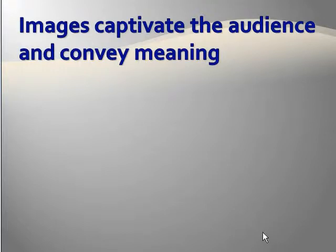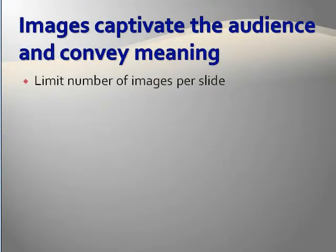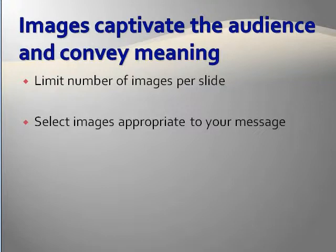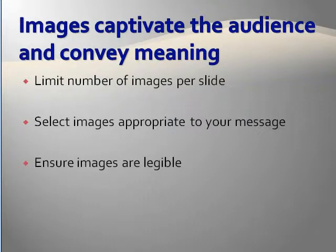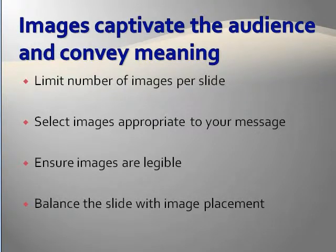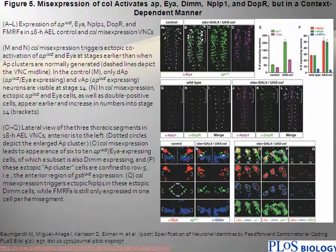Images are one of the most powerful ways for you to convey your message. An image really is worth a thousand words, so limit the number of images per slide to help your audience focus on your main point. Be sure to use images that are appropriate to your message; otherwise you risk distracting your audience. You also want to ensure that the images are legible and visible — nothing is more annoying than hearing the presenter apologize that the figure is illegible. Place images on a slide so that they balance the text. This slide is an example of what not to do: too much text and a figure that is too complex. This may work for a peer-reviewed journal article, but it is not effective for a presentation.